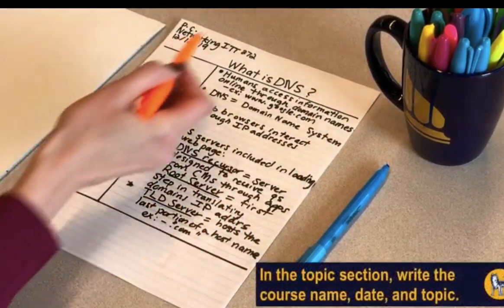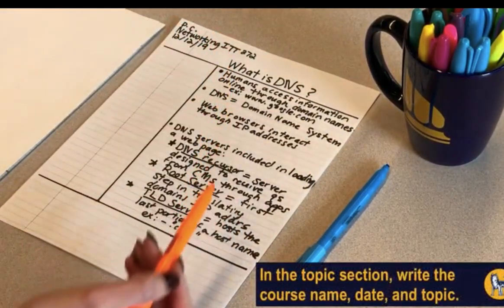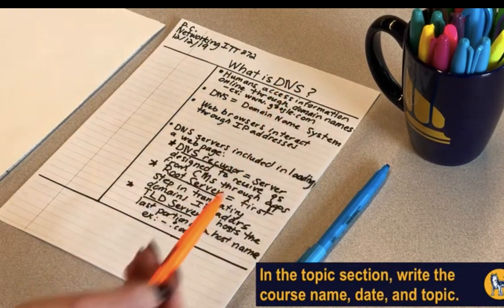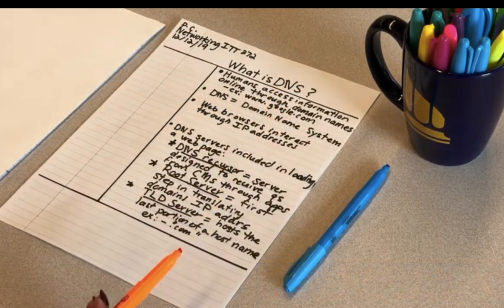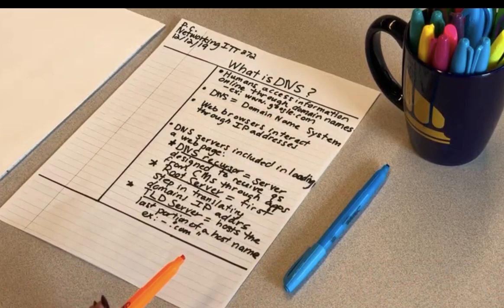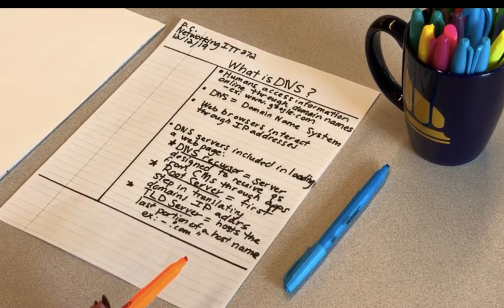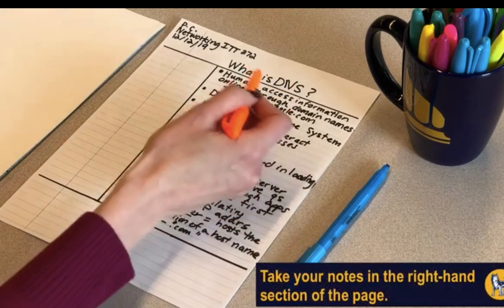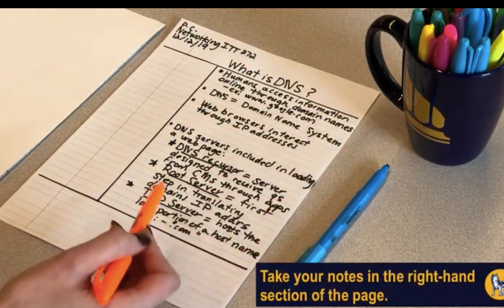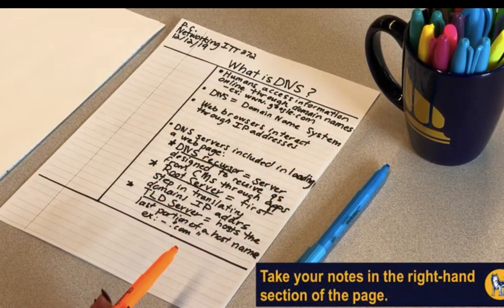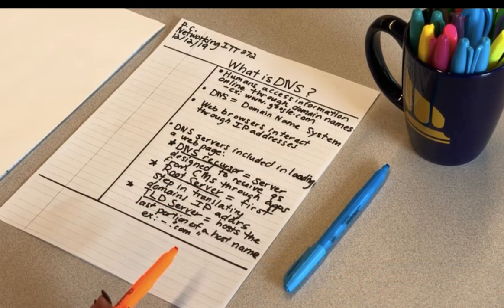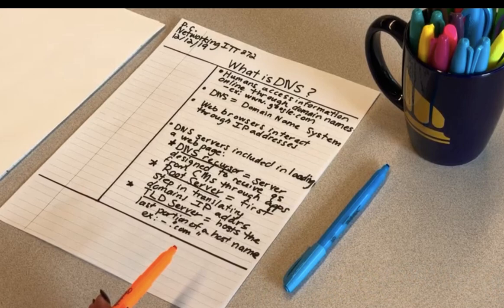In the topic section, write the course name, date, and lecture or reading topic. Doing this consistently will help you keep your notes organized and make reviewing course material much easier. Take notes in the largest section of the page. While listening to a lecture or reading a text, take notes only in this right-hand section of the page. Keep it simple.